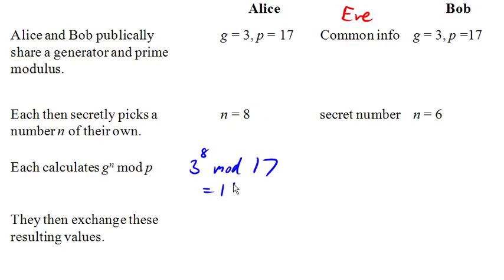And so Alice's modulus is 16. So Alice's number is 16. Now Bob is going to do the same thing with his secret number. So he's going to take generator to the n mod 17, and this one comes out to be 15.